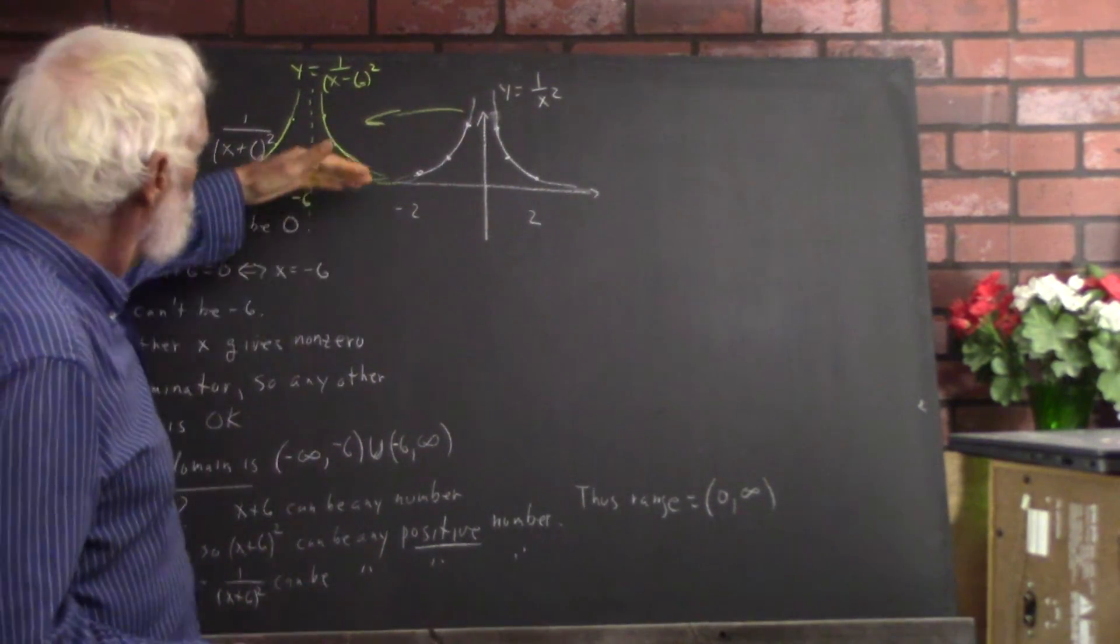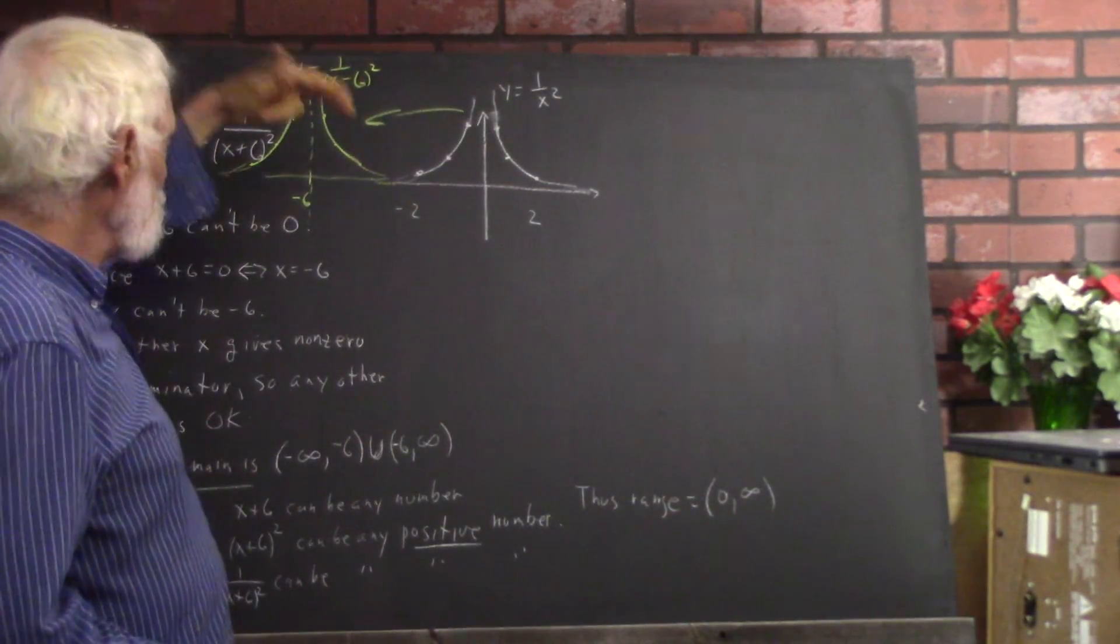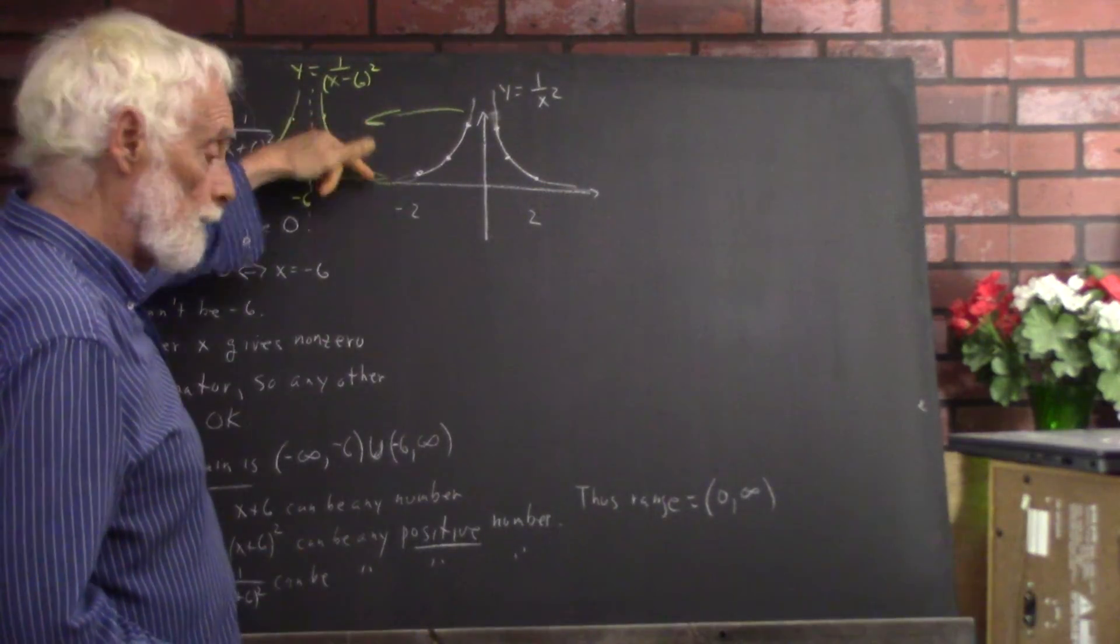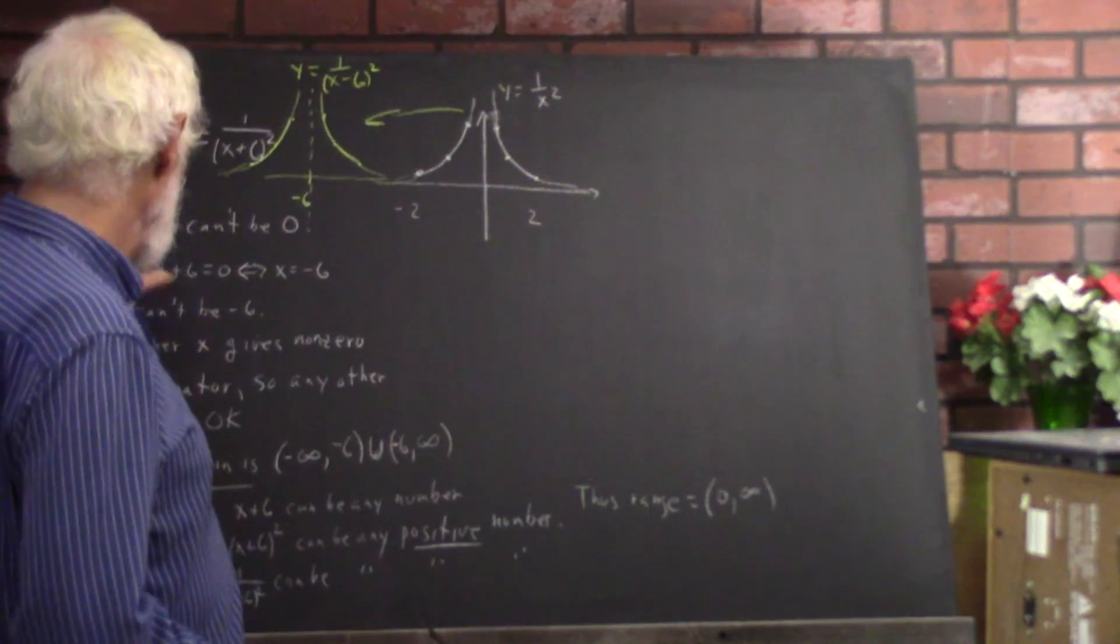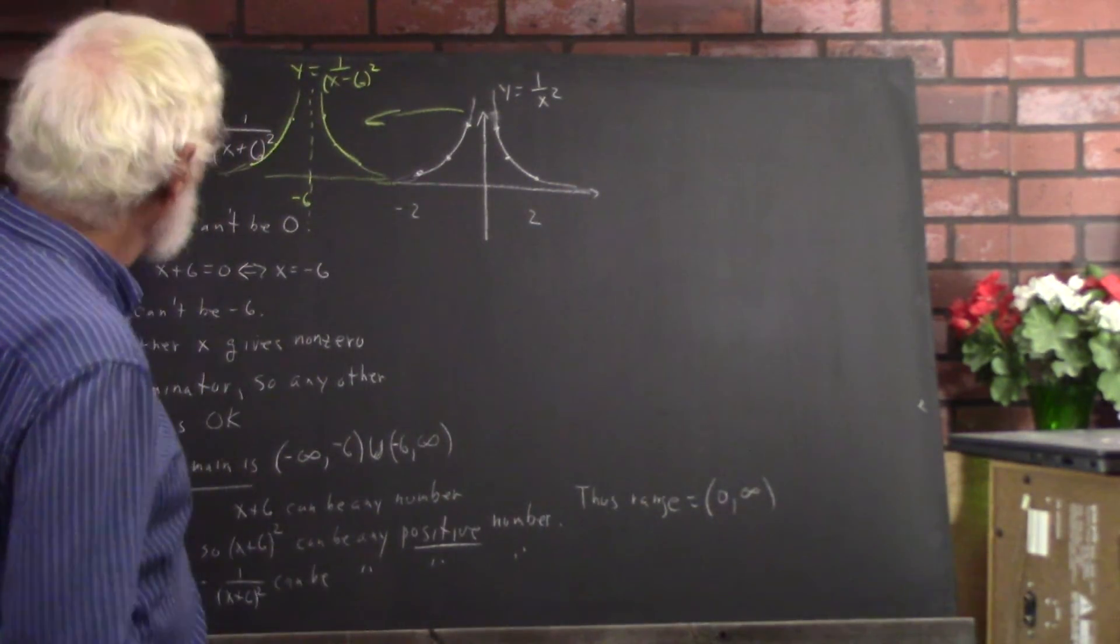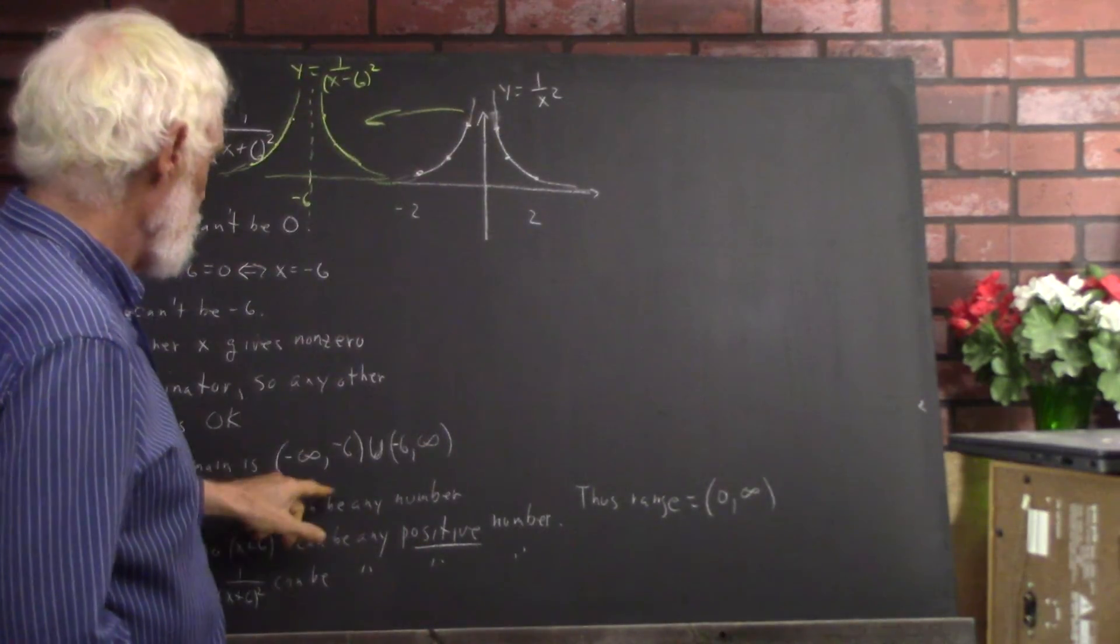And its domain is still from 0 to infinity. Sorry, its range is still from 0 to infinity, not including 0, the open set of 0 to infinity here. And its domain is this, excluding x equals negative 6.